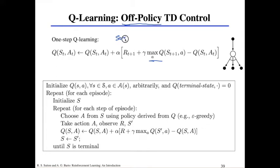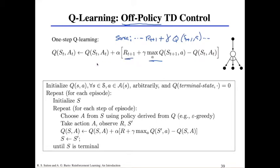For SARSA, the update used the actual next action taken: Q(s_t+1, a). For Q-learning, we take the max over Q(s_t+1) instead. So we're not assuming we'll take the experience of what we actually did next; we update weighted by the difference between what we expected and what we got, but when planning the next step, we assume the best possible action will be taken.